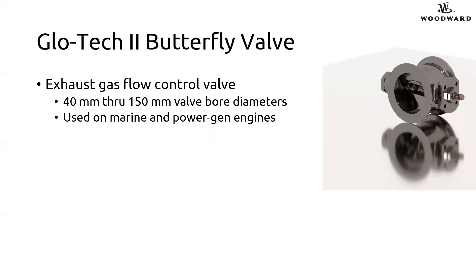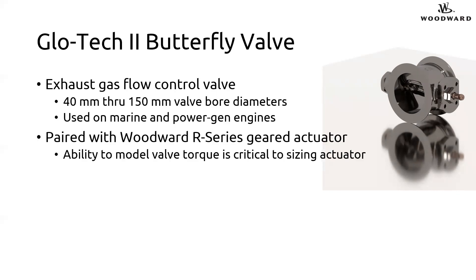One of those products is the Glotec II butterfly valve shown here. It's an exhaust control valve — a family of different valve sizes with bore diameters ranging from 40 to 150 millimeters. It's used primarily on marine propulsion for engines powering cruise ships, and also on power generation engines to help control exhaust flow. It's paired with the Woodward R series geared actuator, so the ability to model the valve torque is critical to sizing the actuator, enabling us to provide a complete solution that works at the customer's particular flow conditions. That's the key motivation for understanding the aerodynamic torque acting on the butterfly plate.